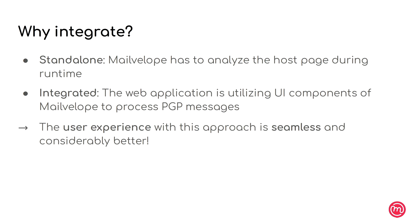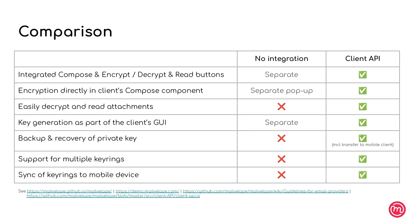We have two stages: the standalone version and the integrated one. What we currently have in Nextcloud Mail implements the first three functionalities — basic email write and read functionality for encrypted emails. But Maevelob's client API provides more, including components for key generation inside the email client.